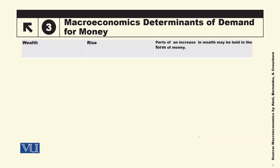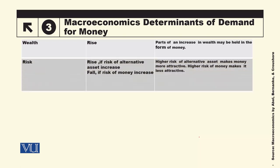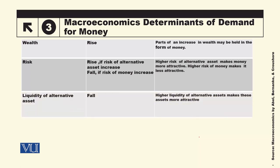Wealth के rise करने से money demand rise करेगी क्योंकि लोगों को ज्यादा खर्च करना है। Risk दो तरह का है — अगर alternative assets का risk बढ़े तो money demand बढ़ेगी क्योंकि money relatively safer asset है। लेकिन अगर money को hold करने पर risk बढ़ जाए जैसे inflation erratic हो जाए, तो money demand कम हो जाएगی۔ Liquidity of alternative assets में इजاफा होने پر — stocks, bonds more liquid ہو جائیں، house mortgage کرکے آسانی سے loan لے سکیں — تو money demand will fall۔